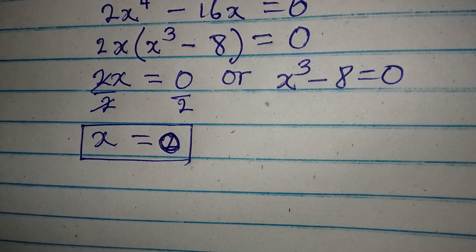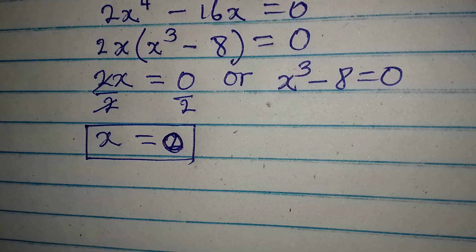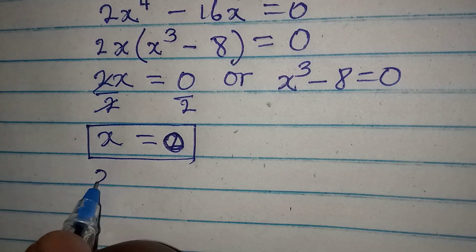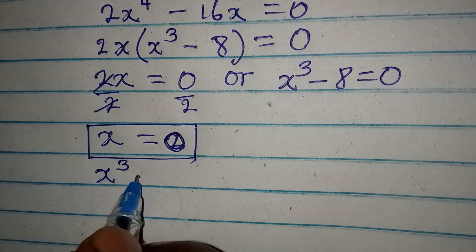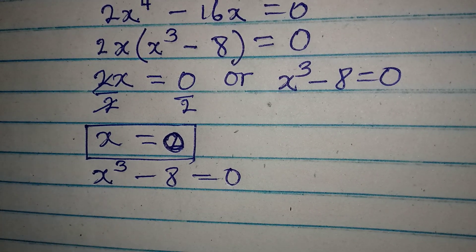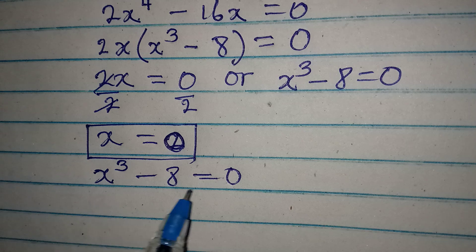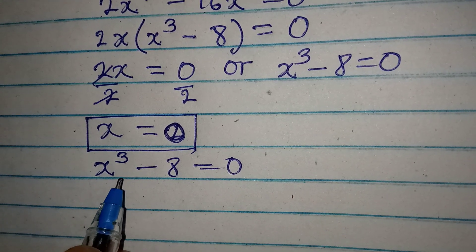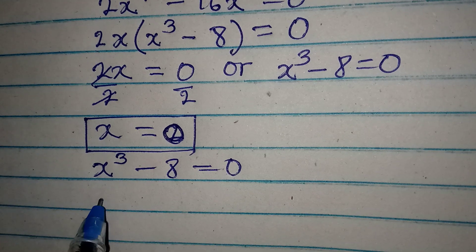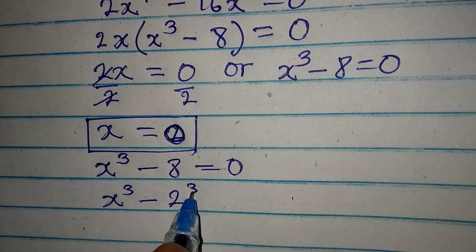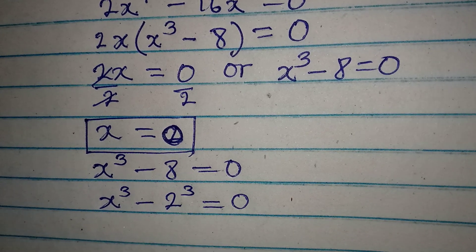Now to get the other set of values, we go back to the equation x to the power of 3 minus 8 equals 0. We are going to get three values of x from here because it has the power of 3. So I rewrite this as x to the power of 3 minus 2 to the power of 3 equals 0.